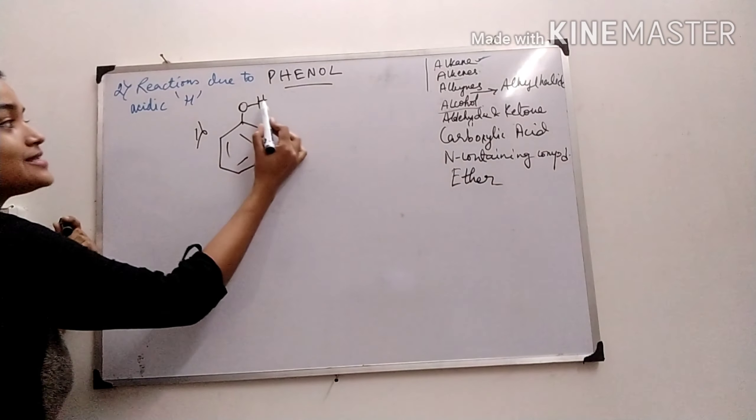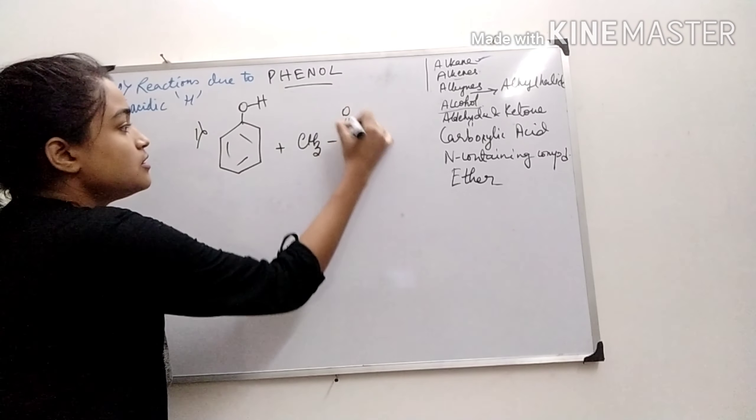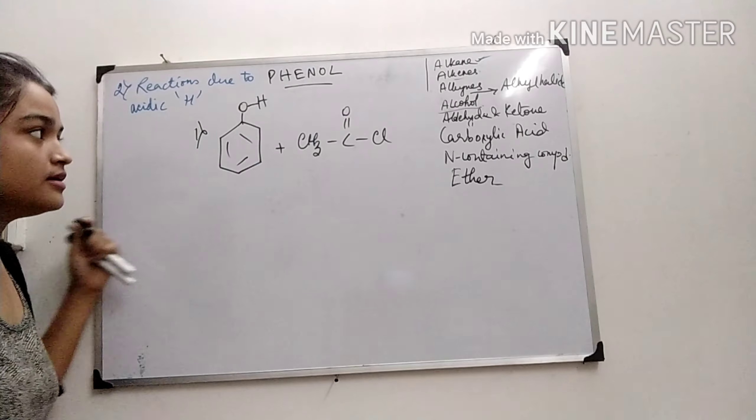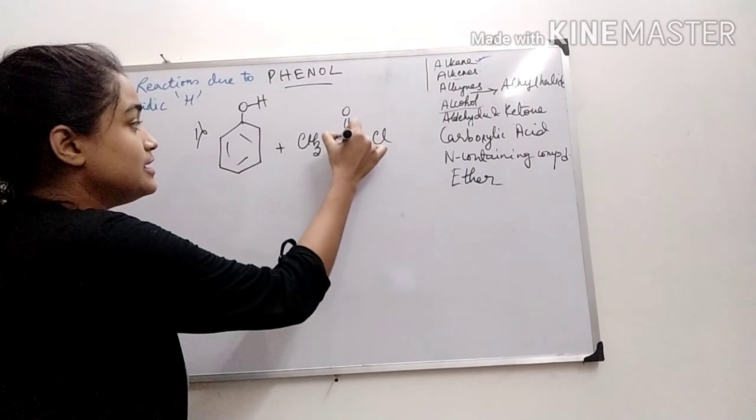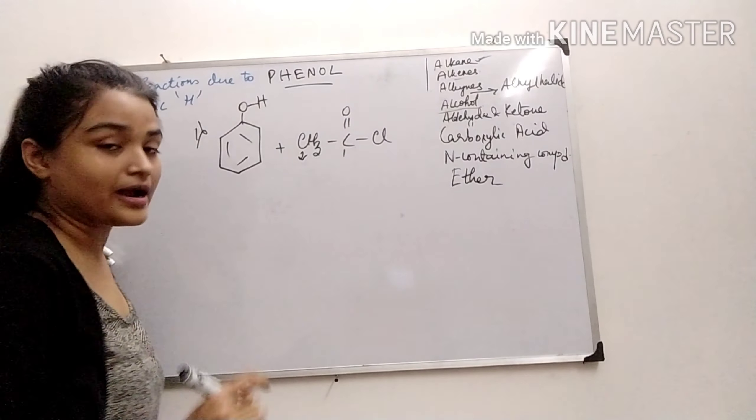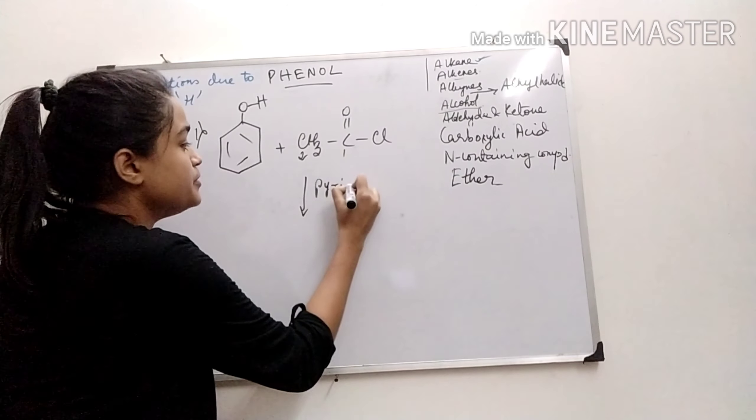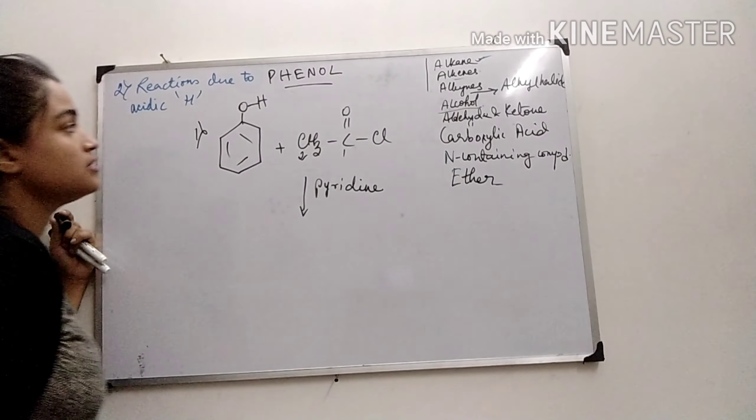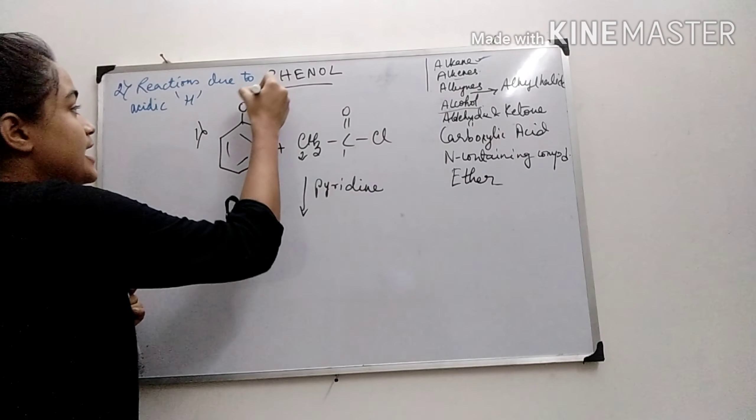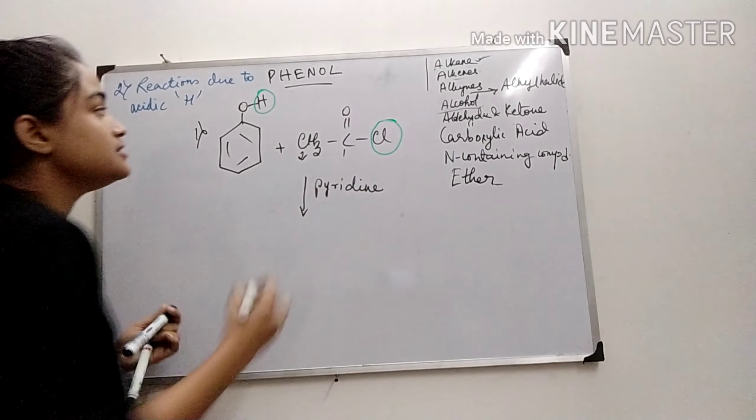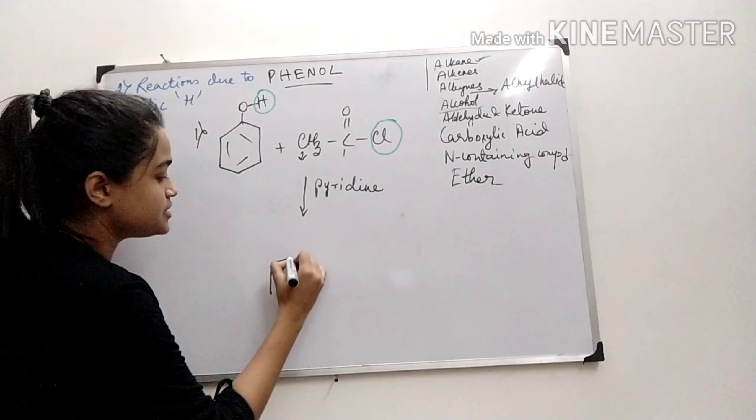So this is the acidic hydrogen, and now treating this with acetyl chloride. The common name of this compound is acetyl chloride, but this is ethanoyl chloride in IUPAC terms. In presence of pyridine, this H and Cl will be eliminated, and we will get an ester.